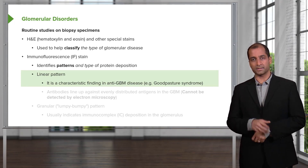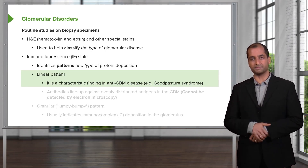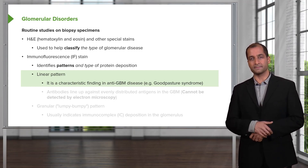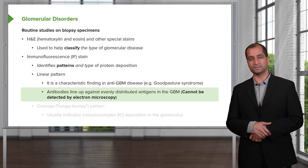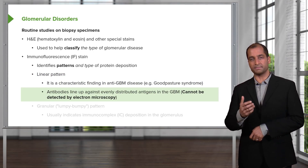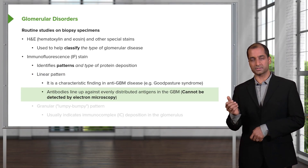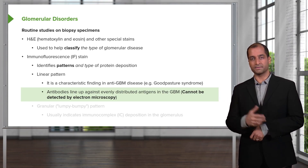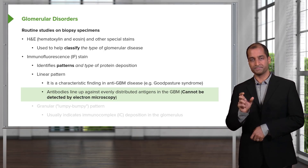If instead you have immune complexes — for example, Type 3 hypersensitivity as may occur with SLE — that means antigen-antibody complexes, which is different from Goodpasture's Type 2. In Type 3, immunofluorescence recognizes those antigen-antibody immune complexes depositing either on the subepithelial or subendothelial side of the glomerular basement membrane.